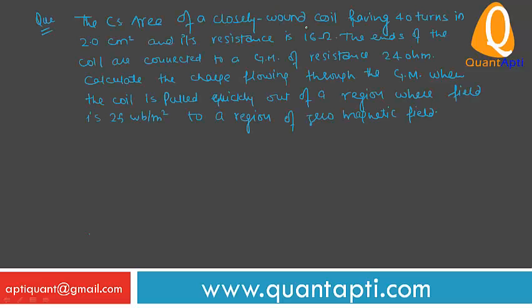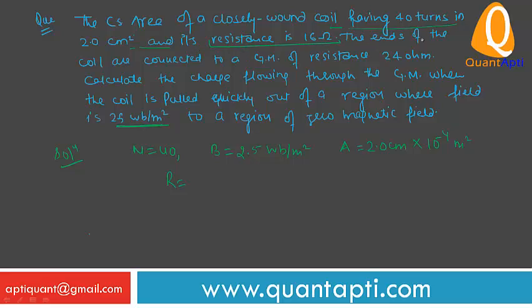Now the cross section area of a closely bound coil having forty turns is two centimeter square. B is equal to two point five weber per meter square. B is given. Area is given as two centimeter, so centimeter will be changed to meter. So meter square. And R is given - the cross section of closely bound coil having forty turns in two centimeter square and resistance is sixteen ohm. The ends of the coil are connected to a galvanometer resistance twenty four ohm.